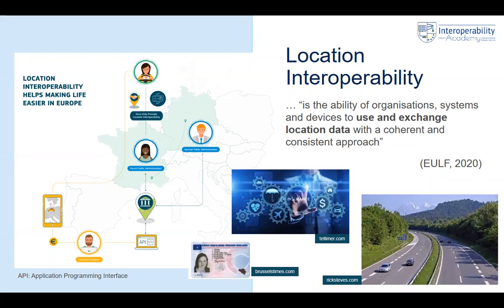From that perspective, location interoperability comes into sight. In general, interoperability — as we've seen in chapter one — is the ability of organizations and systems to use and exchange data amongst each other. But in the context of location data, it's the use and exchange of location data in a coherent and consistent way. This definition is coming from the European Union location framework, which we will see shortly in this chapter.